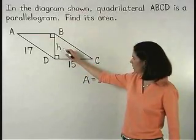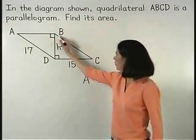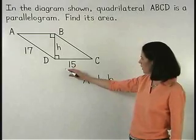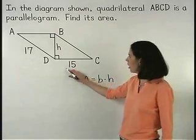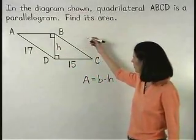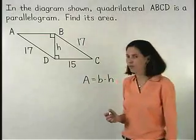To find the value of h, let's use right triangle BDC on the right side of the figure. We can see that one of its sides has a length of 15, and since opposite sides of a parallelogram are congruent, the hypotenuse of the right triangle must have a length of 17.